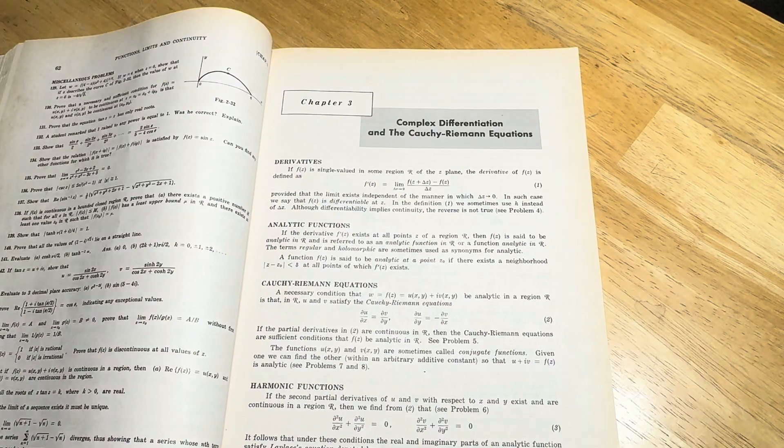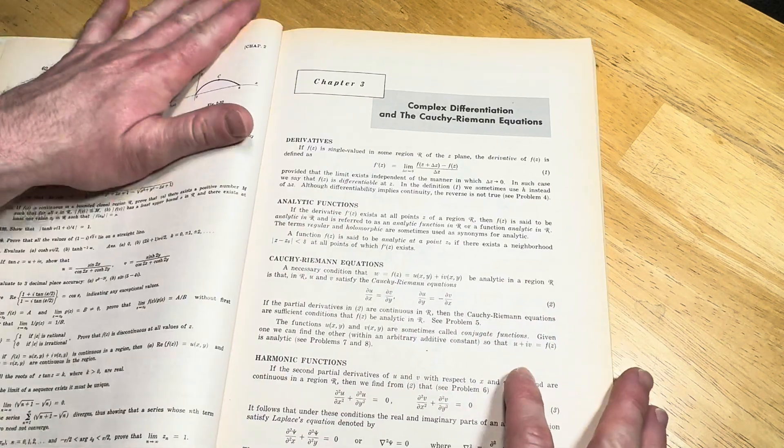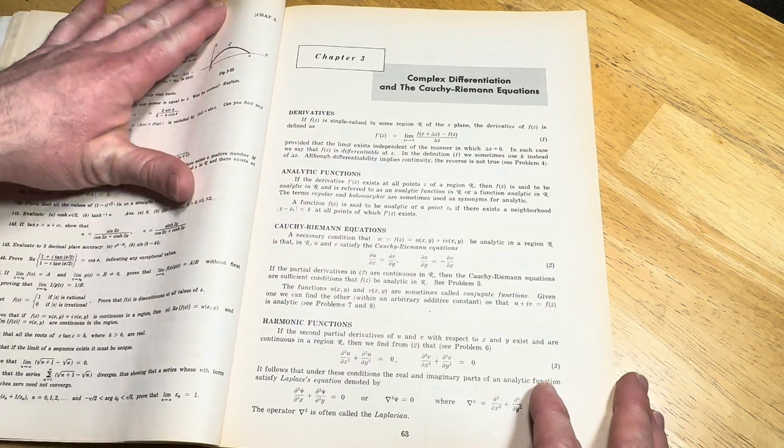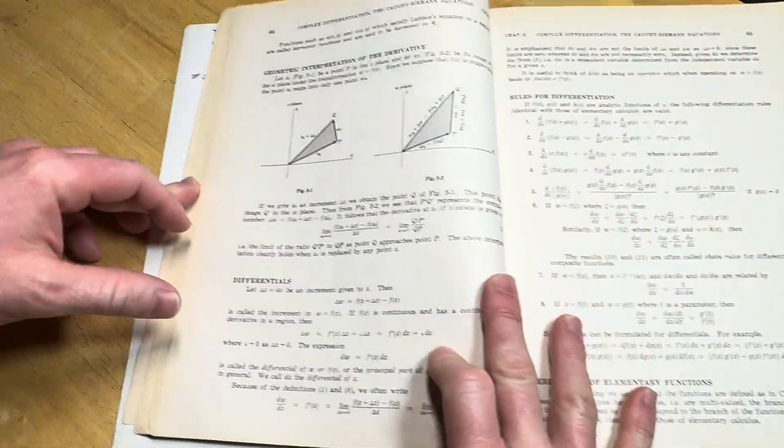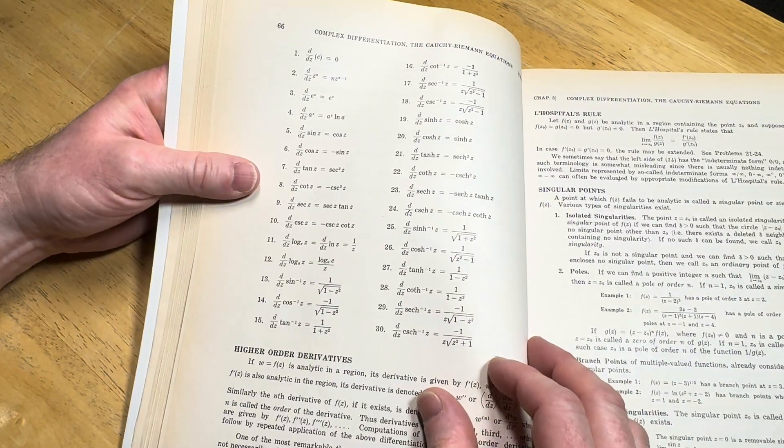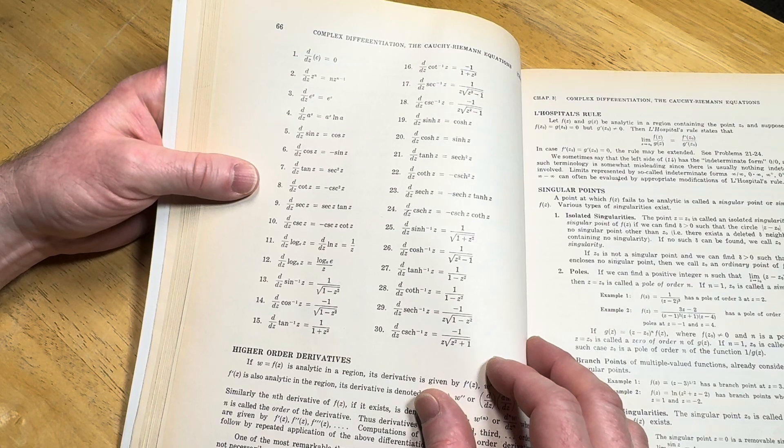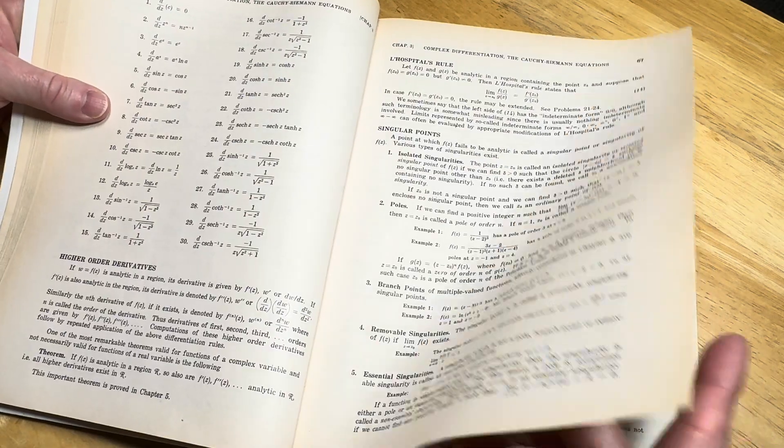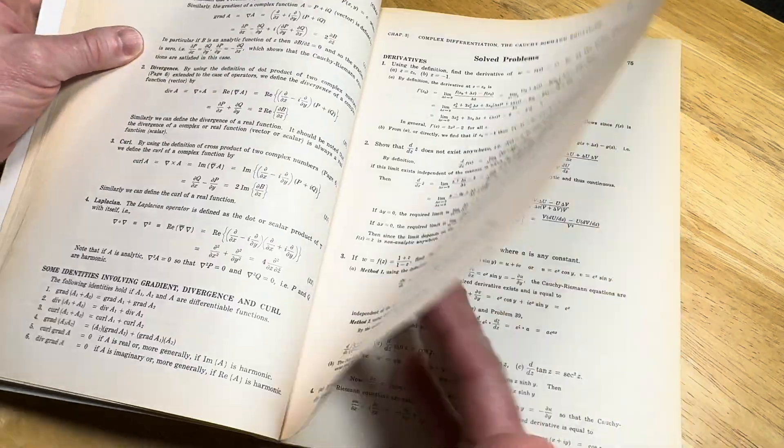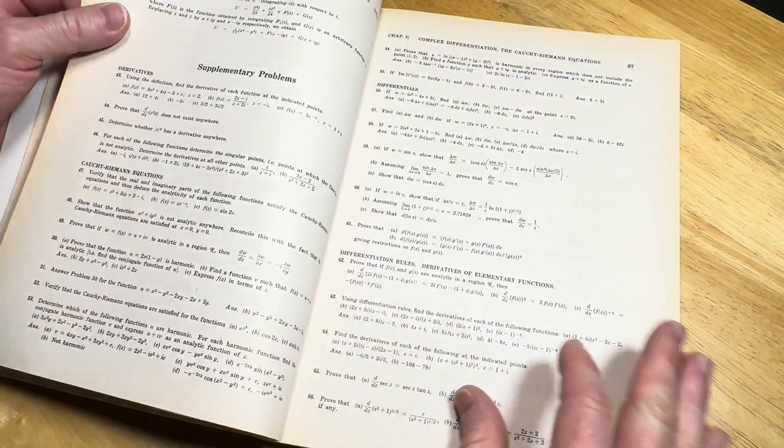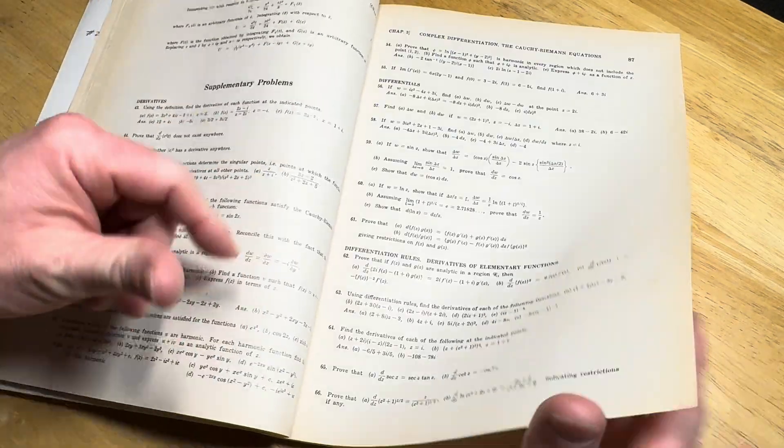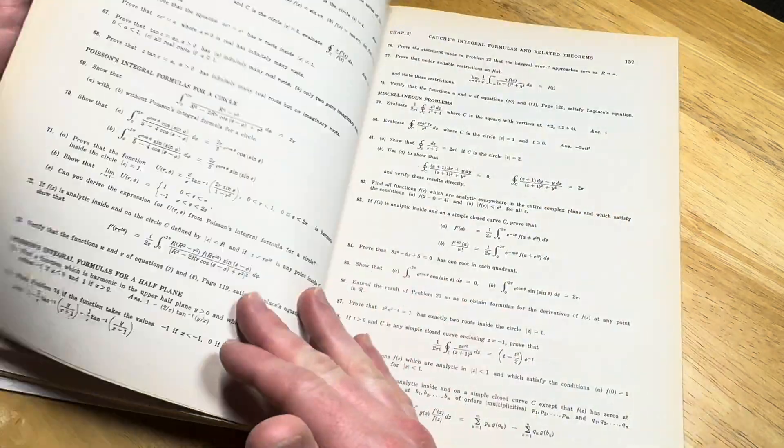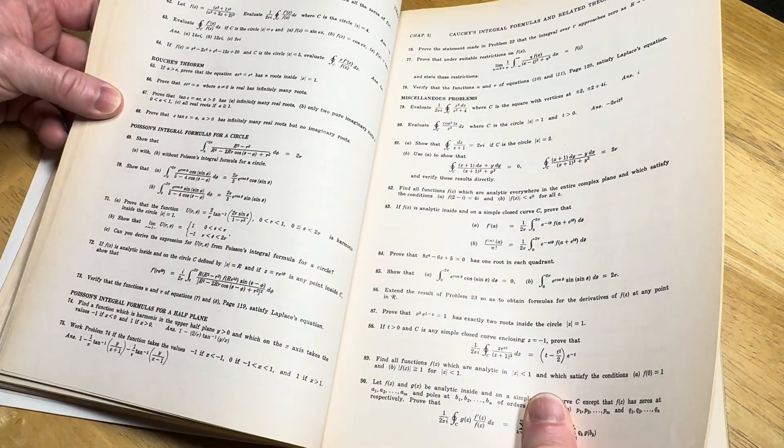Chapter 3 is on the complex differentiation and the Cauchy-Riemann equations. This is stuff you study in a typical undergrad intro course. Talks about analytic functions, Cauchy-Riemann equations, harmonic functions. And then some more stuff here, lots of formulas. That's a lot of formulas, quite a few. And then we have solved problems. Let's see how many they give us in Chapter 3 in terms of solved problems. Looks like they give us 42 solved problems, that's pretty good. Then supplementary problems continue, they don't start at 1 again, so it's just a continuation.